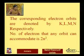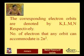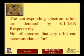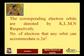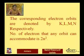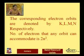The second quantum number is the angular quantum number l. For small n, the corresponding electron orbits are denoted by K, L, M, and N respectively — these are capital letter designations. The number of electrons that any orbit can accommodate is 2n², where n determines the number of electrons in any particular orbit.